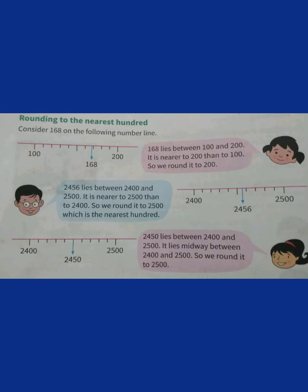Let us see the next topic: rounding to the nearest 100. Let us take an example of 168. As it is told to round it up to the nearest 100, the range difference should be 100. So, the lowest limit is 100 and the upper limit is 200. So, 168 is nearer to 200, not 100. So, 168 can be rounded to 200.